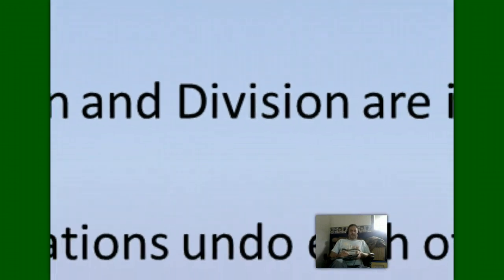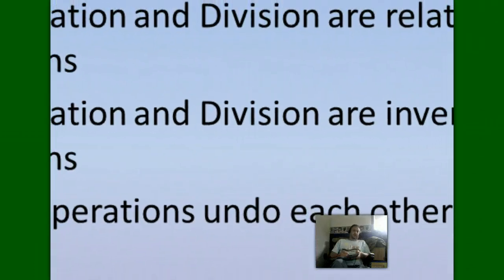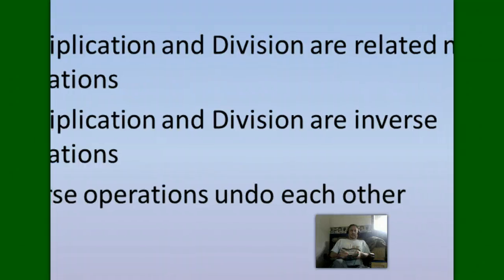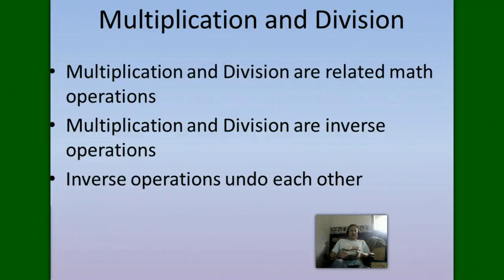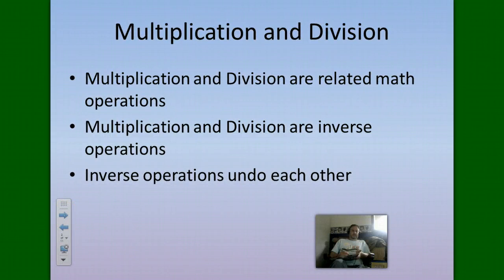Multiplication and division are what we call inverse operations. If you need to think of a simpler word for inverse, think of the word opposite. So they are opposite operations. Opposite operations or inverse operations mean they undo each other. Subtraction undoes addition, addition is undone by subtraction, multiplication is undone by division, and division is undone by multiplication.